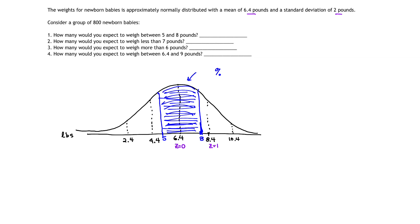At 8.4, z would be 1. At 4.4, z would be negative 1, right? So my z-scores are the things I'm going to use on my chart, but I don't have those z-scores. I need to get the z-scores so I can use the chart.